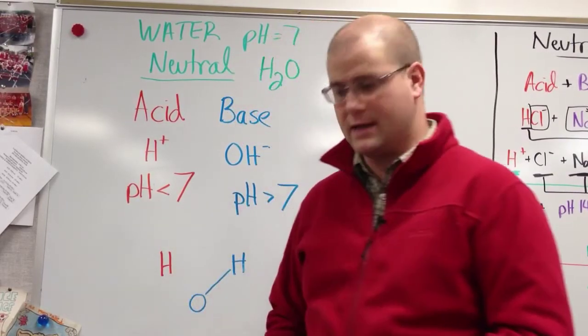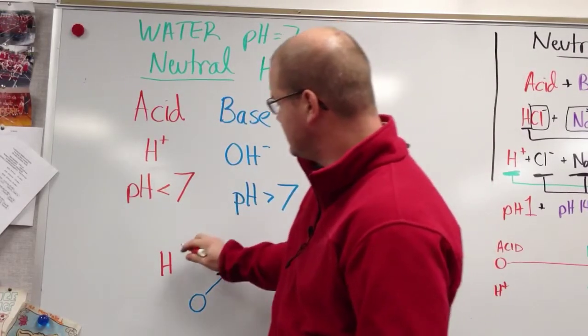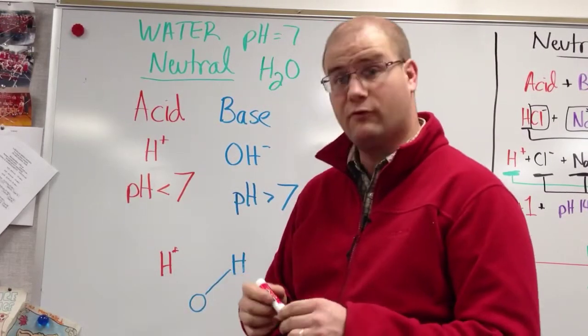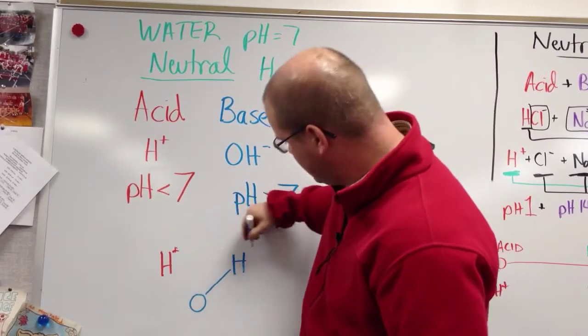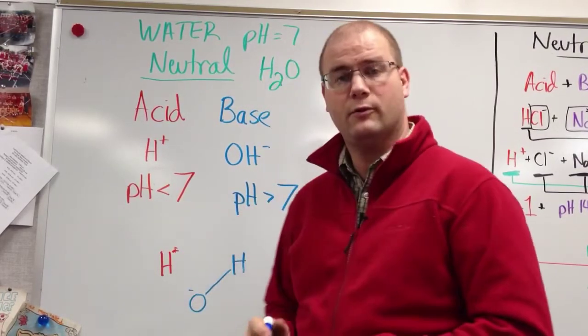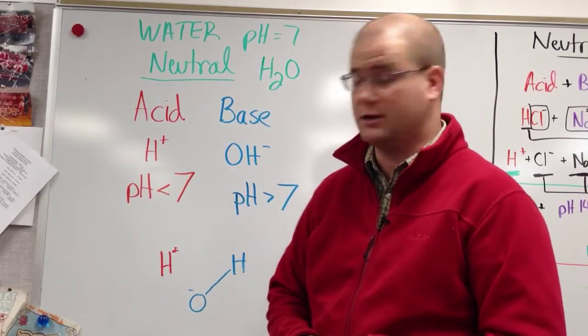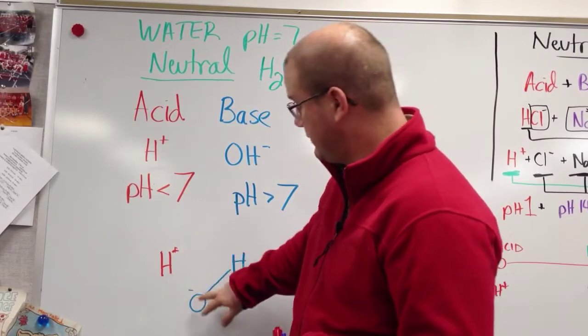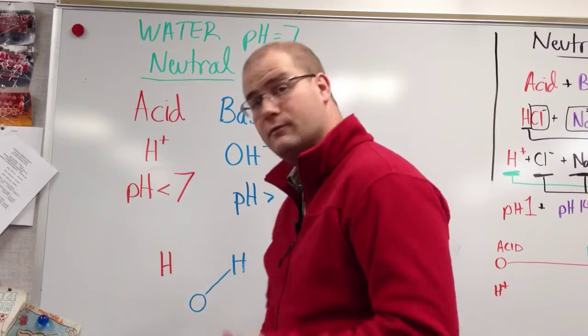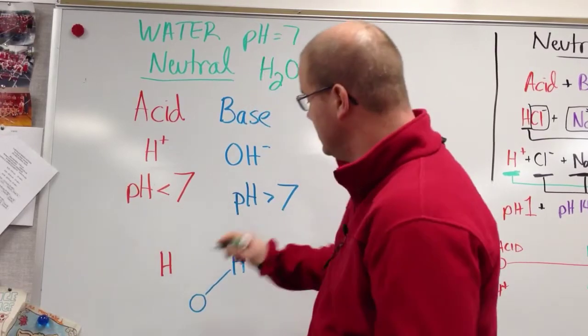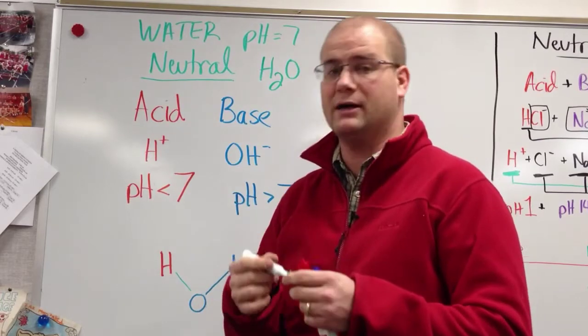Well, so what's going on here is I have my H+ ion from my acid and I have an OH- ion from the base. Now since those are opposites, they tend to attract each other. And since there's only one positive and only one negative, they can cancel each other out. So if I put that back the way it was, I have a hydrogen bonded to a hydroxide.